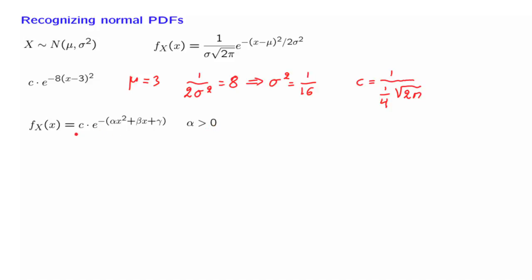What we will do next is we will try to write this PDF in this form. And the trick that we are going to use is the following. We will focus on the term in the exponent, which we rewrite this way. We take out the factor of alpha.